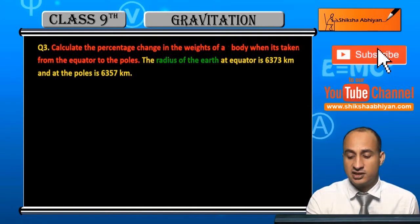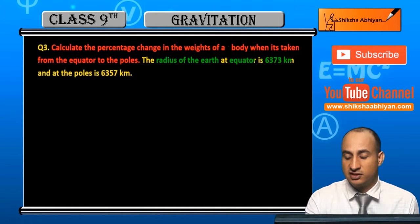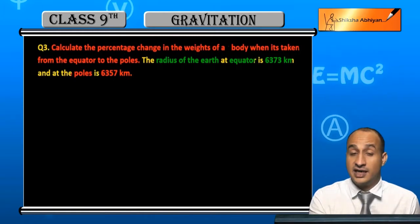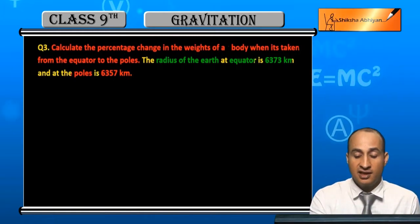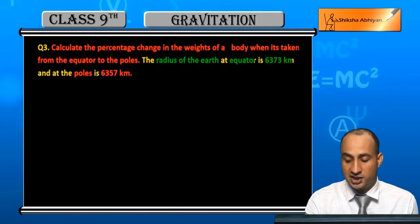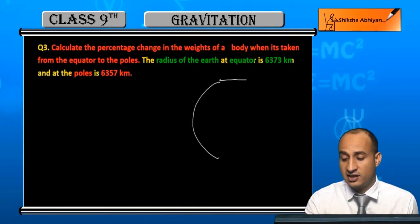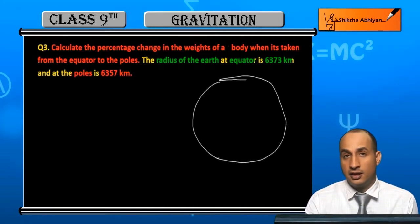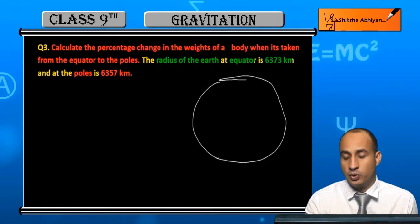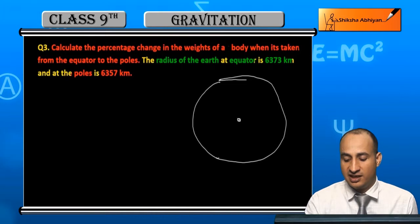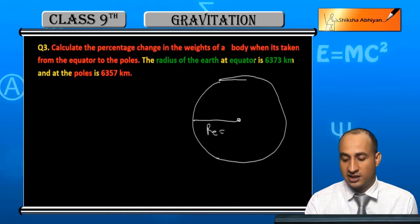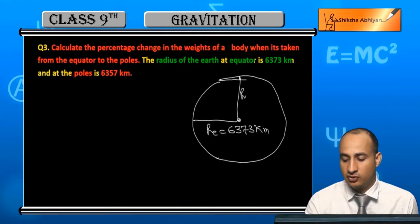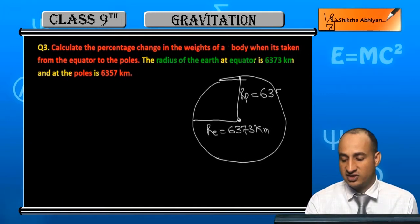Here we have the given information. The radius of Earth at the equator is equal to 6373 kilometers, and the radius at the poles is 6357 kilometers.